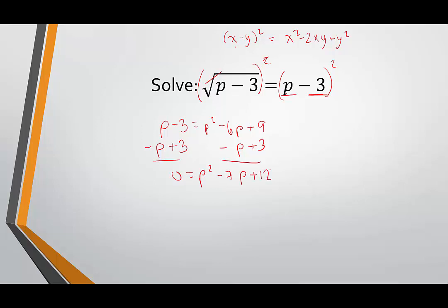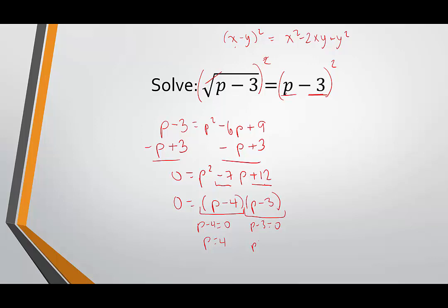Now we want to see if it's factorable — if it is, great; if not, we have to resort to the quadratic formula or completing the square. The good news: this is factorable. We have a target product of 12 and a target sum of negative 7. Two numbers that multiply to positive 12 and add up to negative 7 are negative 4 and negative 3. So it would be (p minus 4)(p minus 3). Setting each factor equal to 0 gives us p equals 4 and p equals 3.